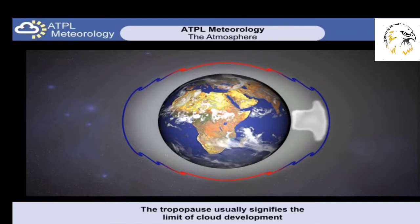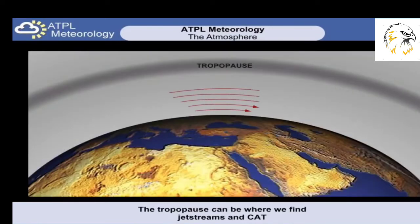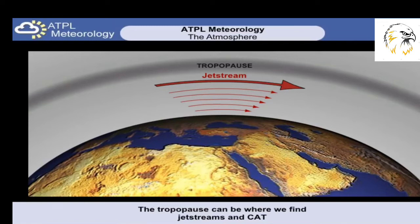However, the tropopause does tell us other things. As a result of very low densities in the upper atmosphere, the upper winds tend to be very strong, and in some cases form narrow bands. These are called jet streams. These in themselves can be beneficial if our flight goes in the same direction. But with these jet streams, there is a likelihood of significant turbulence. We call this clear air turbulence, or CAT.